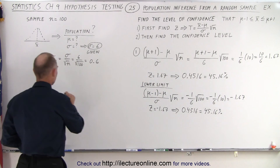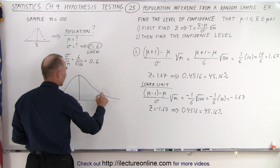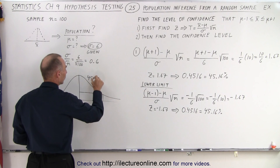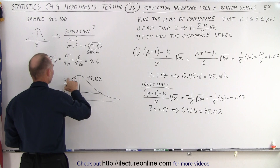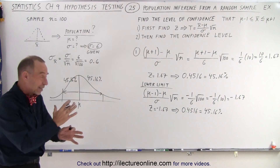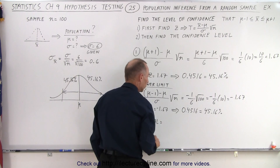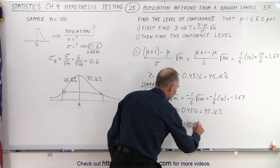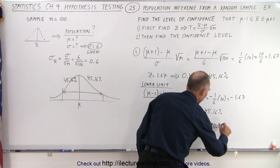So what we did here is find the confidence interval. We found the interval on the right side, which we said was 45.16 percent, and we found the interval on the left side, which was also 45.16 percent. If we add the two together, the total is 45.16 percent plus 45.16 percent, which gives us 90.32 percent.